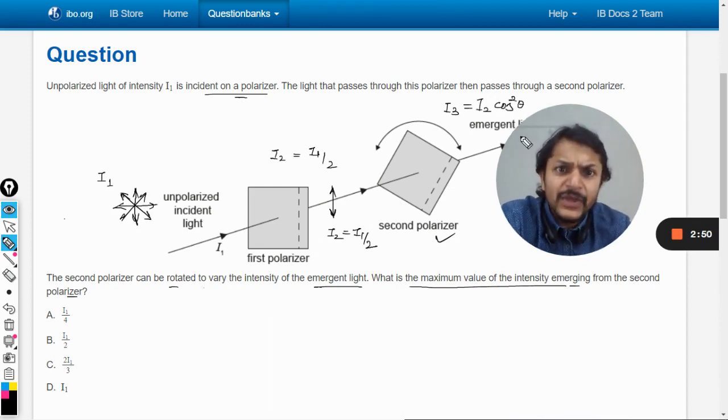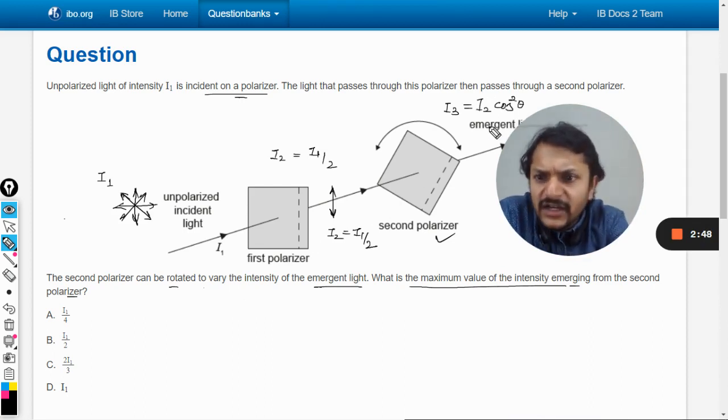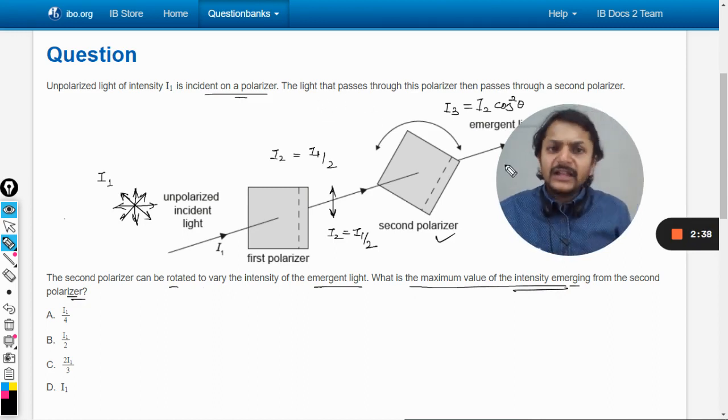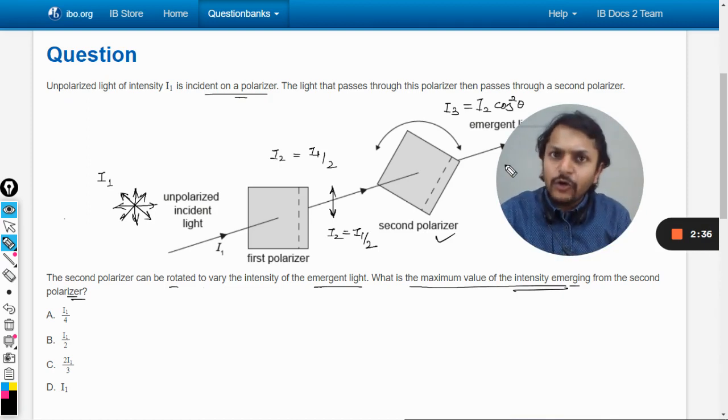How can this be maximized? What is the maximum value of intensity emerging from the second polarizer? We are varying theta now, so obviously we have to take theta such that cos²θ is maximum.